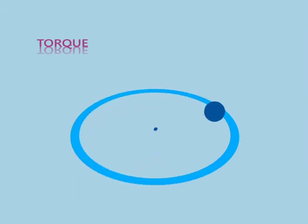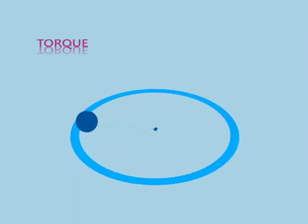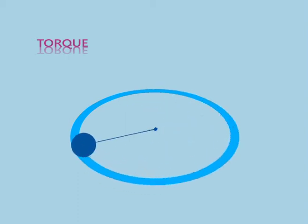Mathematically, torque is defined as the cross product of force and the lever arm distance, which tends to produce rotation.